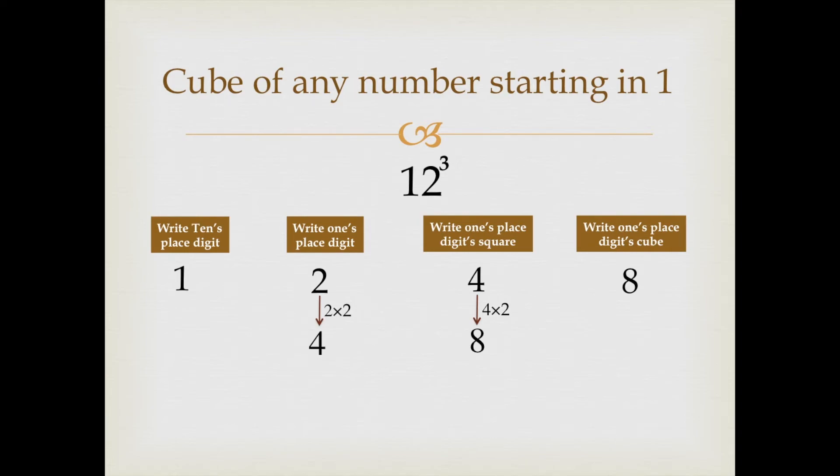Now we write down the answer directly. Write the last digit, which is 8, as it is. 4 plus 8 makes 12, but we cannot write 12 because it's a 2-digit number.